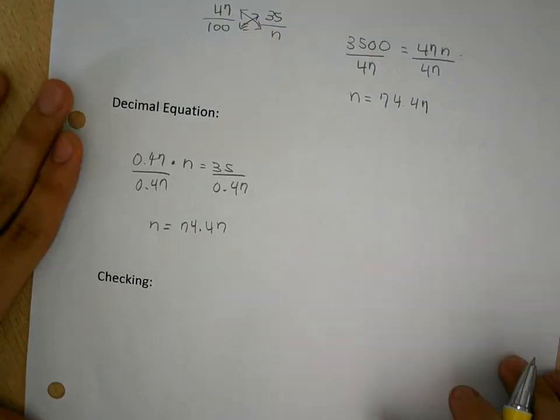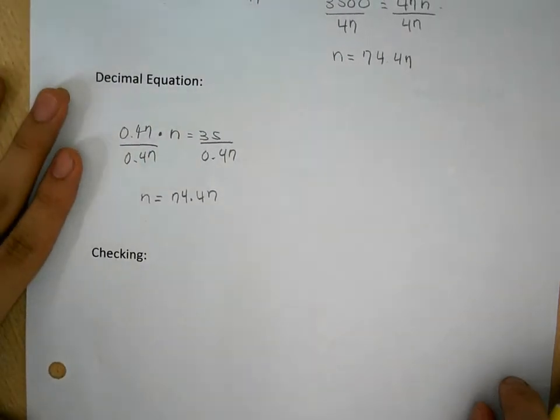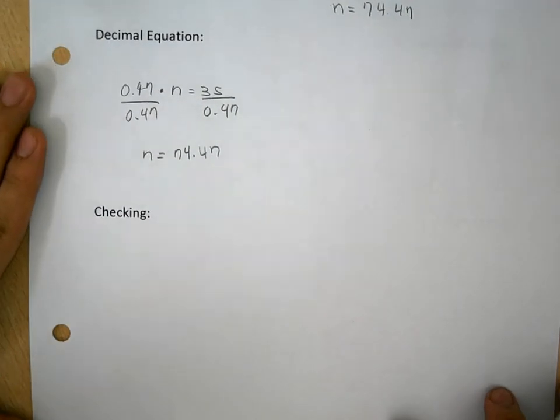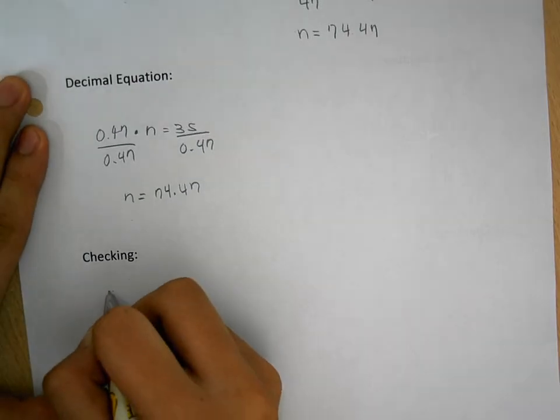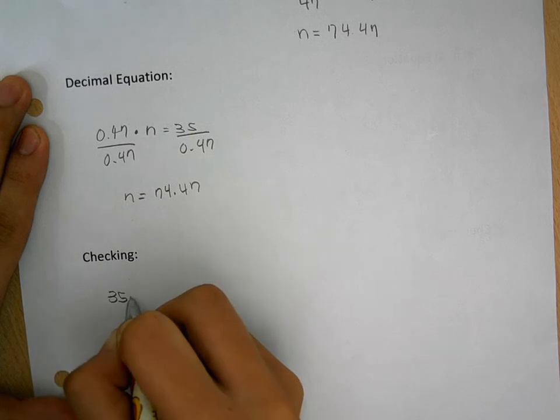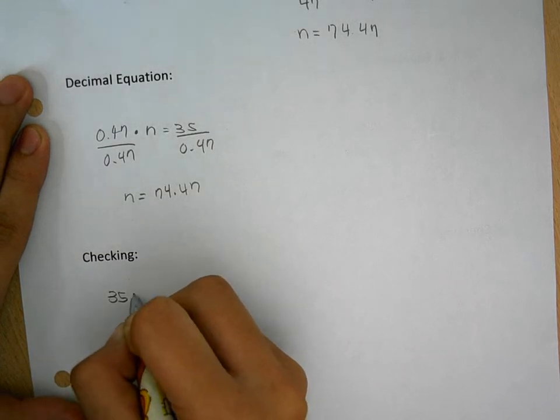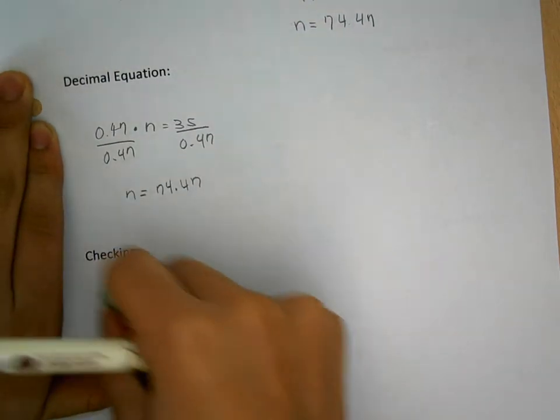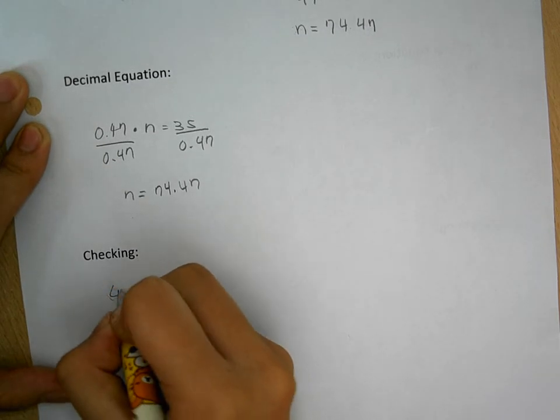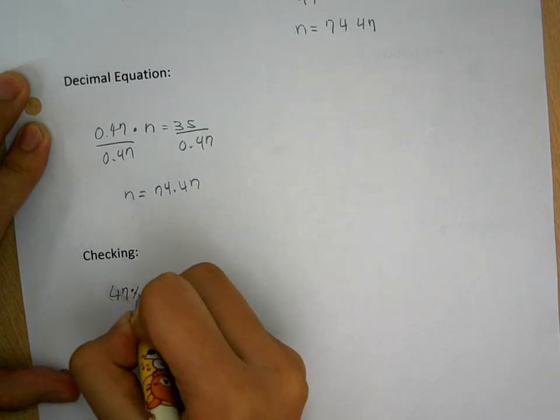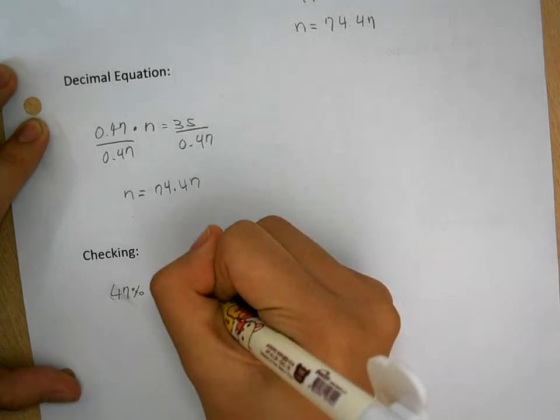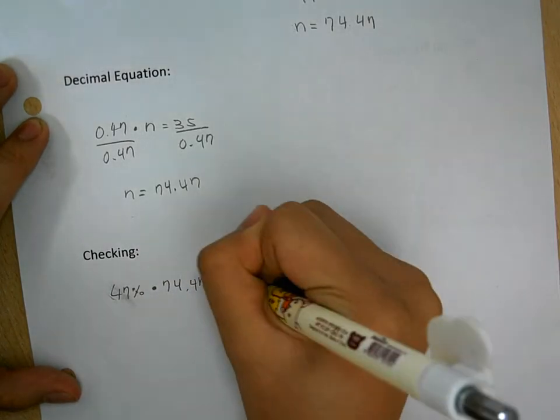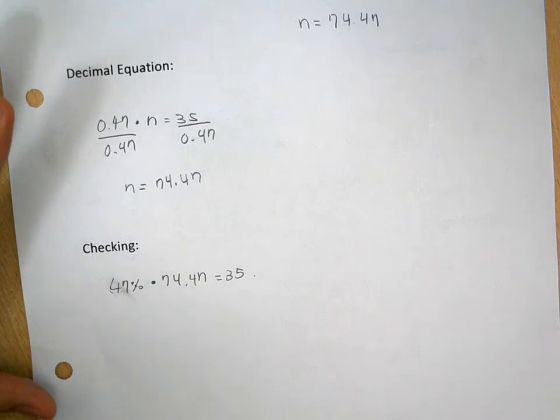You want to make sure that the answer is correct, so you have to check your answer by substituting it in. So, 47% times 74.47 would be equal to 35. Let's check that.